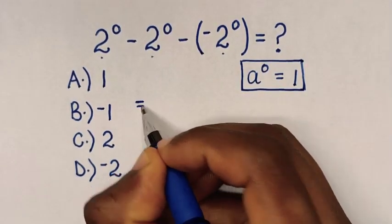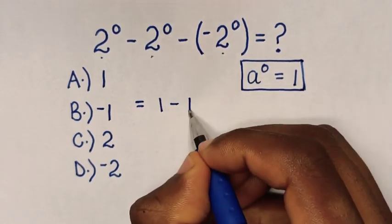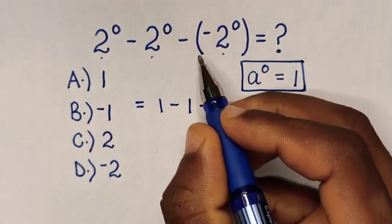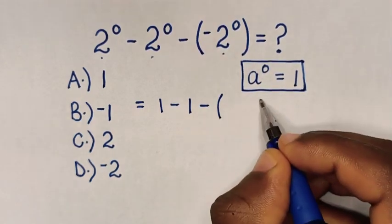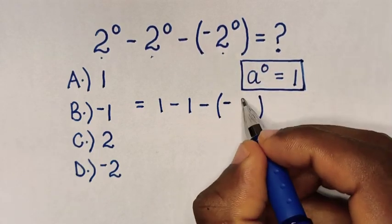Then, it will be equal to 2^0 is 1 minus 2^0 is 1, then minus - in here we have a bracket, then negative inside the bracket, 2^0 is 1.